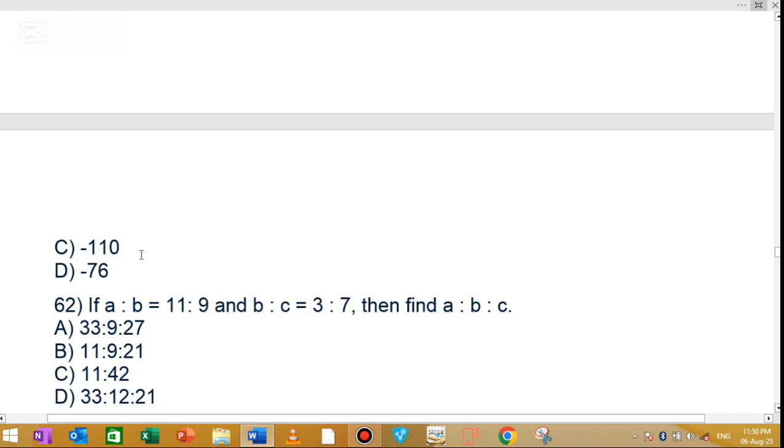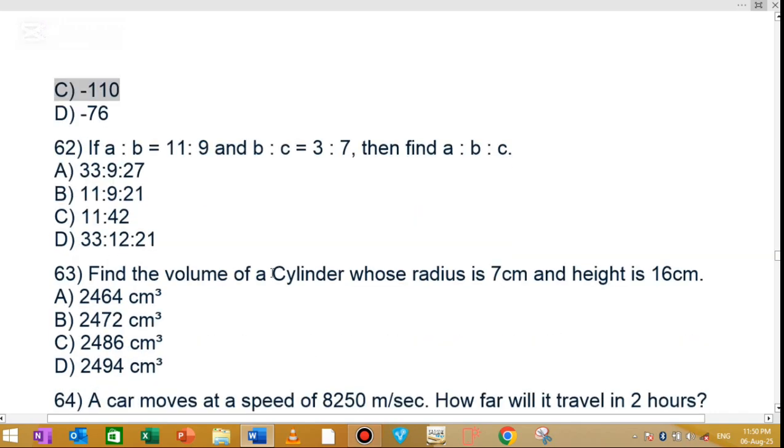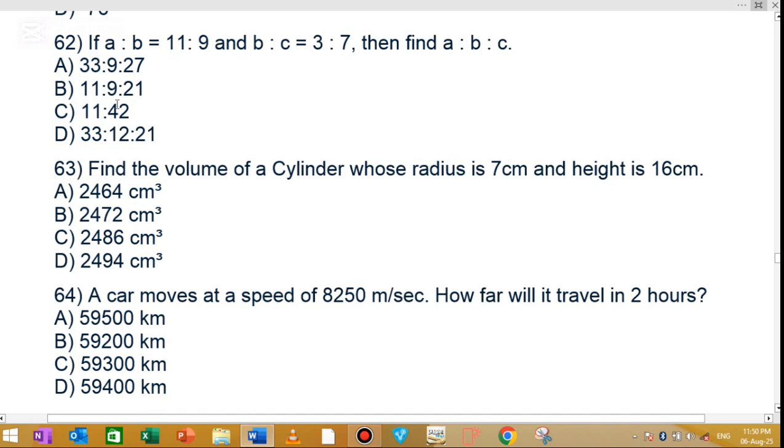MCQ number 62: If A ratio B is equal to 11 ratio 9, and B ratio C is equal to 3 ratio 7, then find A ratio B ratio C. The correct answer is 33:27:63. Option D is the correct answer.